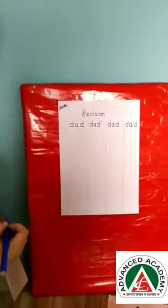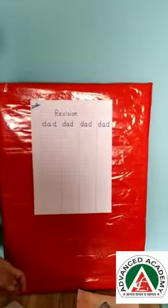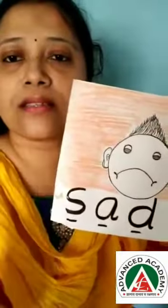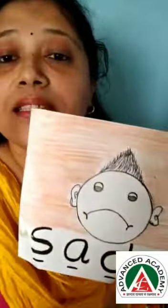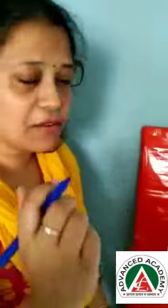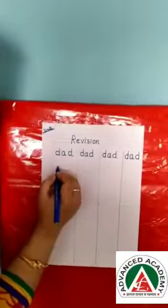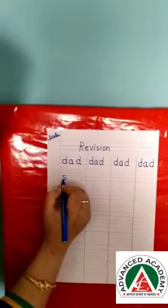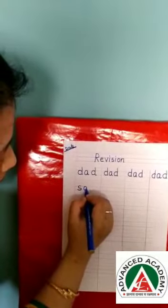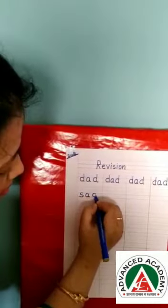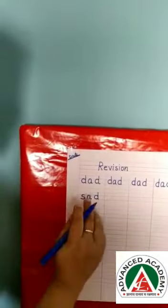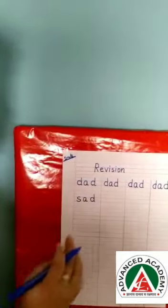Now the next word is S, A, D — Sad. Now again we will write: S, A, D — Sad. Again, we will write three times.